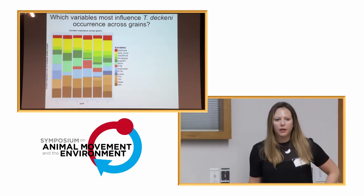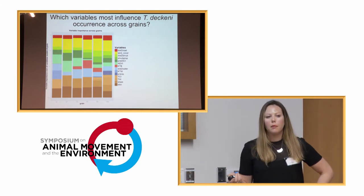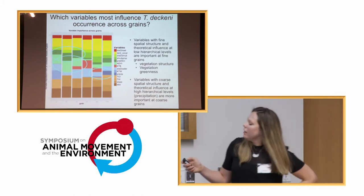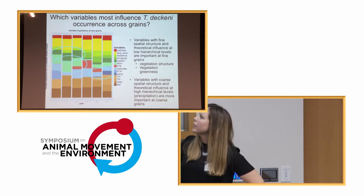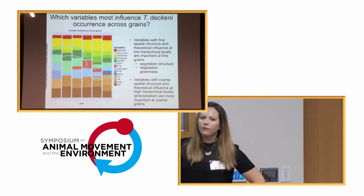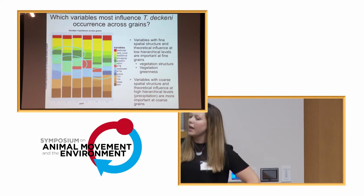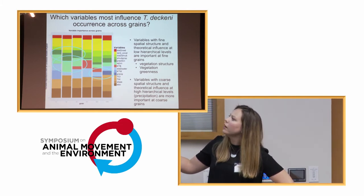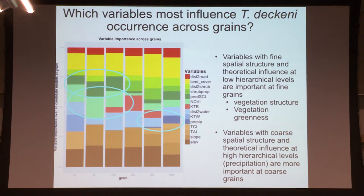We can dig into these models more deeply and look at how model coefficients, variable importance, deviance explained, and univariate model AUC change across spatial grains to interpret scale dependence in a more quantitative manner. In brief, our expectations from the spatial structure of the environmental predictor variables are largely met for von der Decken's hornbill. The vegetation structure variable is very important at fine spatial grains as expected. NDVI, drawn from very high resolution satellite imagery with fine spatial structure, is also important at fine grains. Climatic variables like the interpolated precipitation layer are only important at coarse spatial grains. So von der Decken's hornbill appears to be responding as expected to the spatial structure of the environmental variables themselves.